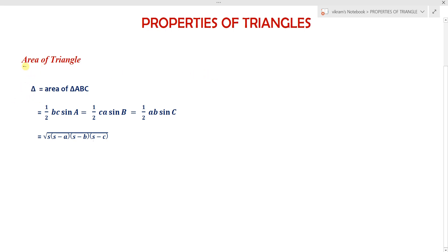Let the given triangle be ABC, and its area is denoted by delta. Delta represents the area of a given triangle, which equals one-half times BC sine A, or one-half times CA sine B, or one-half times AB sine C.